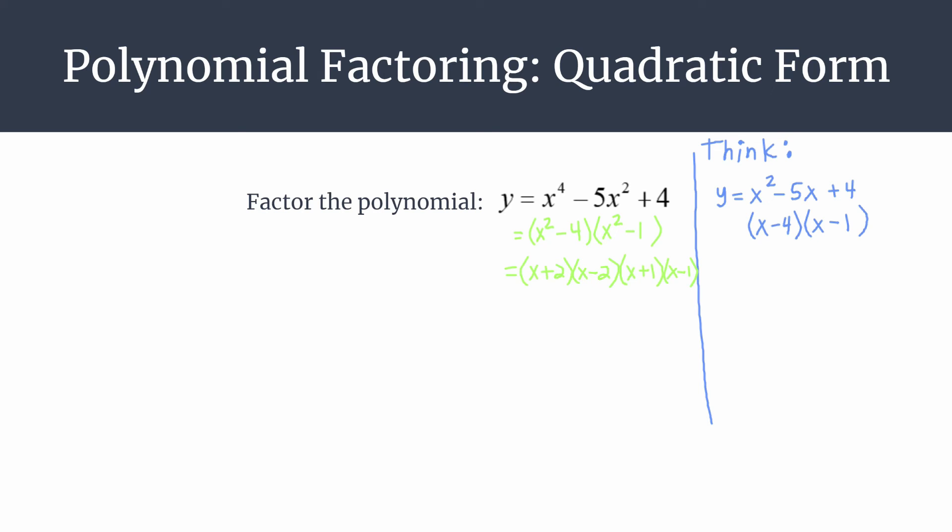A huge advantage to factoring a polynomial is that then you can see its zeros or x-intercepts. Simply take each factor, set each one equal to zero using that zero product property, and you'll get your x-intercepts.